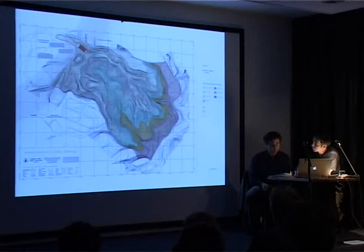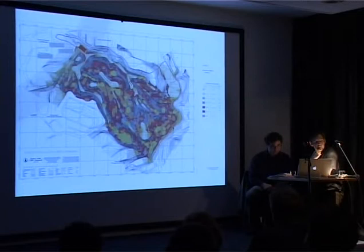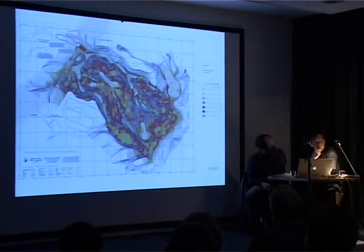Green areas are higher, and this more tellingly shows you inclinations. The grey areas have more than 60% inclination. Legally, from the building code of the city of Caracas, you're not allowed to build in any zone which has more than 45% inclination.